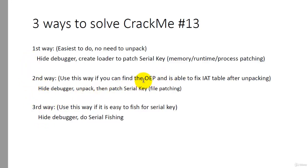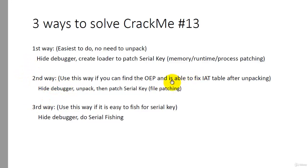Assuming that you can find the OEP, you will then try to unpack it by dumping the OEP file and then trying to fix the import address table. Sometimes fixing the IAT is not so easy, so if you are unable to fix the IAT, then the second way cannot be used and you'll be left with the first or third. But assuming you are able to successfully unpack the file, you can go ahead and patch the unpacked file. This is known as file patching.